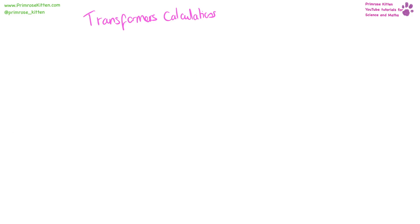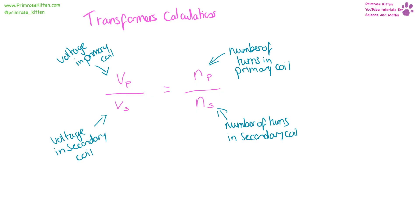When we are looking at transformer calculations, we have voltage in the primary coil divided by voltage in the secondary coil equals the number of turns in the primary coil divided by the number of turns in the secondary coil. Our units for this are going to be for voltage, that is volts. Our number of turns doesn't have a unit because it's just a number.